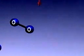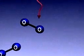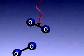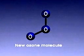Most ozone is found in the upper atmosphere, where it is produced in small amounts when the sun's high energy rays strike ordinary oxygen molecules.